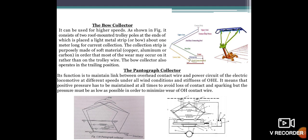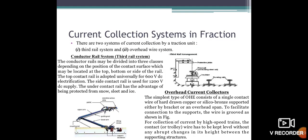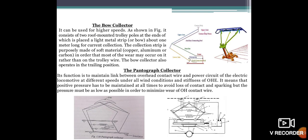The other classification is the bow collector. We can study about the overhead current systems. The first one is the bow collector, as you can see in the figures. It can be used for high speed. It consists of two roof-mounted trolley poles at the ends which are placed at a high metal spring about one meter long of the current collector. The collection strip is purposely made of soft material so that most of the wear may occur on it rather than on the trolley wire. The best example of the bow collector is in railway trains.